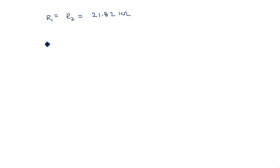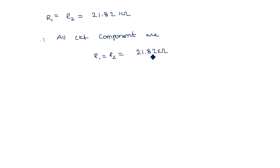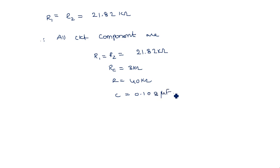Therefore, all circuit components are: R1 = R2 = 21.82 kΩ, Rc = 3 kΩ, R = 40 kΩ, C = 0.108 μF, and VBB = 2 V. This is how to design a one-shot (monostable multivibrator) given the pulse width or gate width.